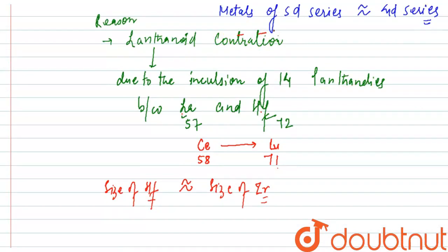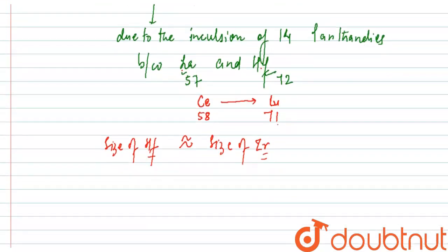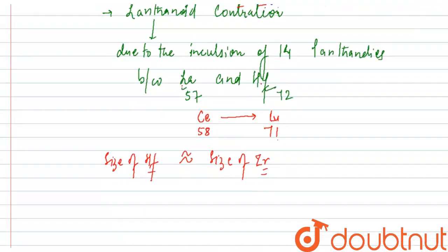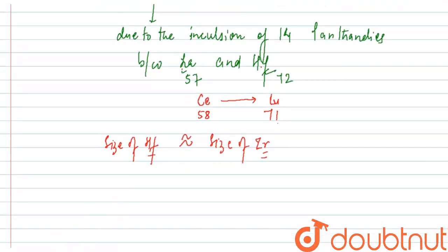So this is the reason. Now both the assertion and reason are true statements, and also the reason is the correct explanation of assertion. So the first option, which says that statement one and two are true and statement two is the correct explanation of statement one, is the correct one and rest all are incorrect. So this is how we can explain this question. I hope this is clear to you.